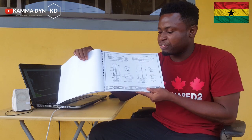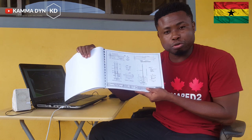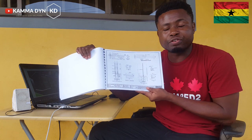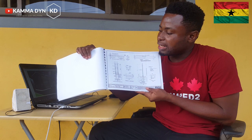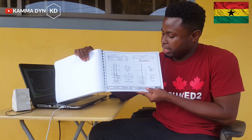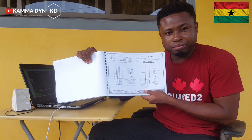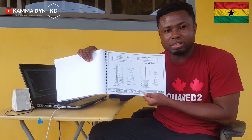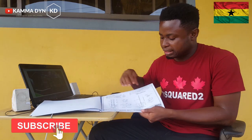We have different types of columns in this particular drawing. The first one I showed you was a different column and this one is a different pillar. We also have the lintel details, the beam details, and another column detail, because there are three different types of columns in this particular design.